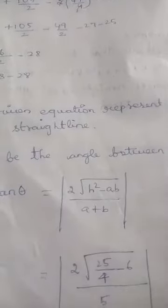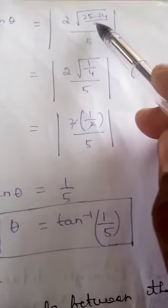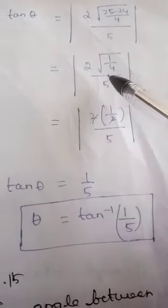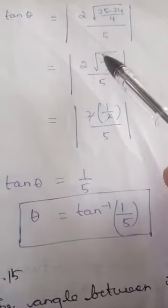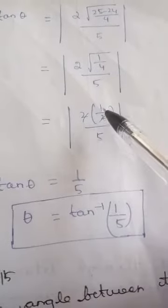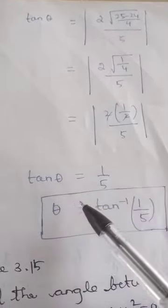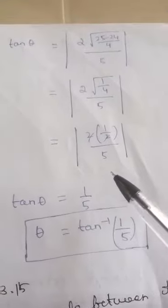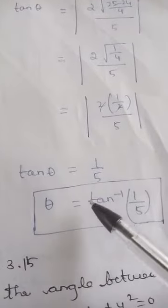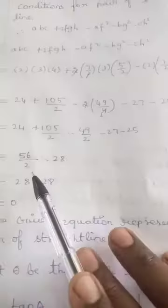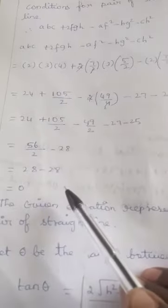Simplifying: 25/4 - 24/4 = 1/4. So tan θ = 2√(1/4)/5 = 2(1/2)/5 = 1/5. Therefore θ = tan⁻¹(1/5). This is the angle between the pair of straight lines.